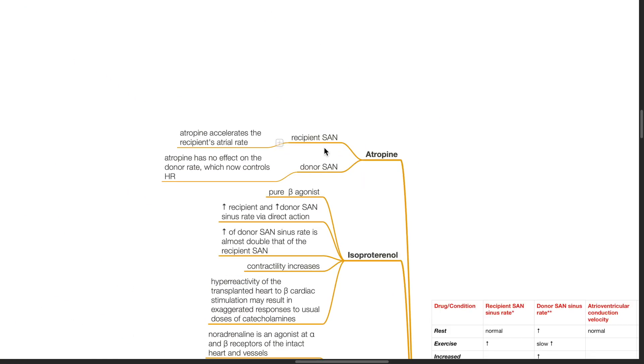Atropine accelerates the recipient's atrial rate but has no effect on the donor's sinus rate which now controls the heart rate.